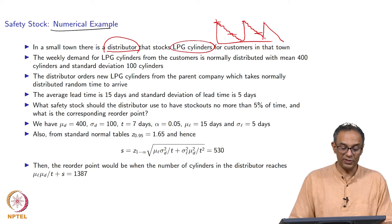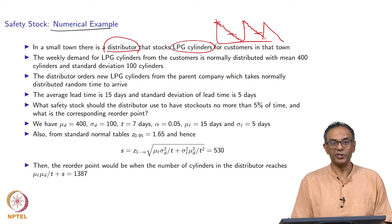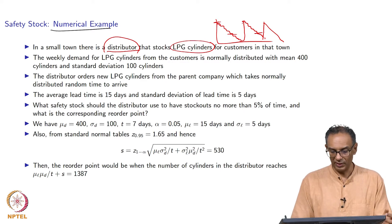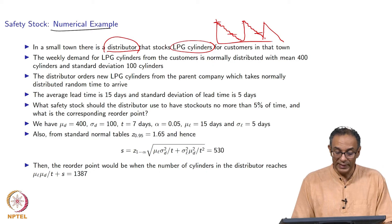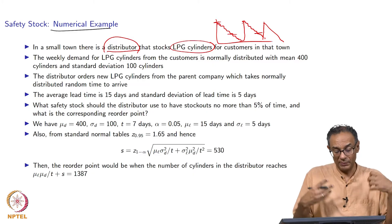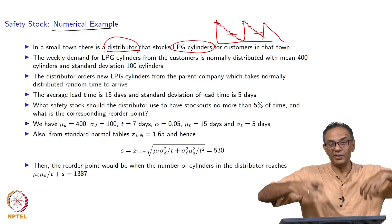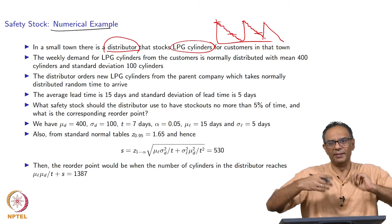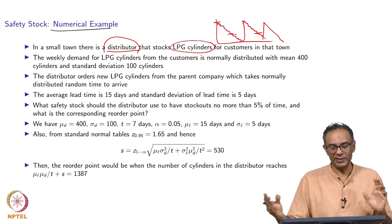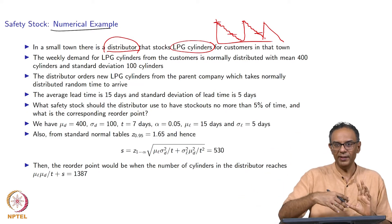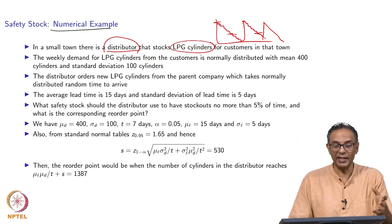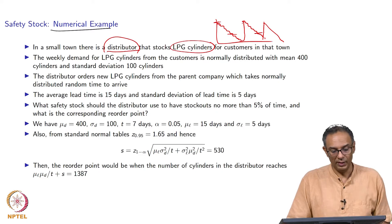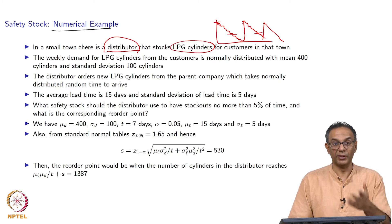We assume the distributor has information about the demand distribution from customers, as well as the lead time for replenishing cylinders. When replenishment arrives, empty cylinders are taken away and new ones are placed on the floor. This is an example of a single-item distributor-type inventory system.